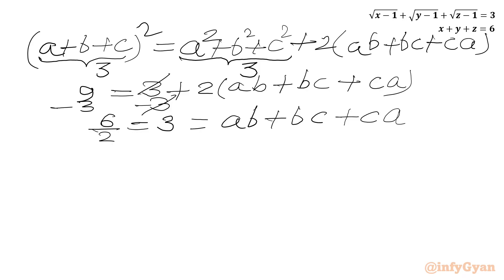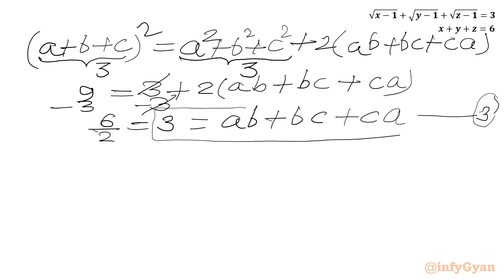This is equation number 3. So equation 1 was a plus b plus c equals 3, and equation 2 was a squared plus b squared plus c squared equals 3.